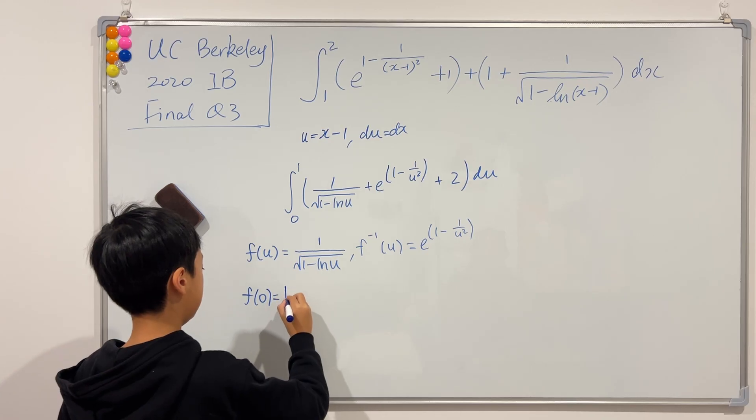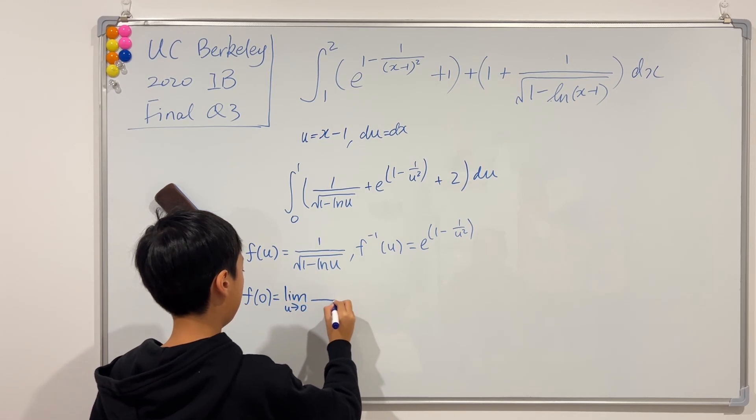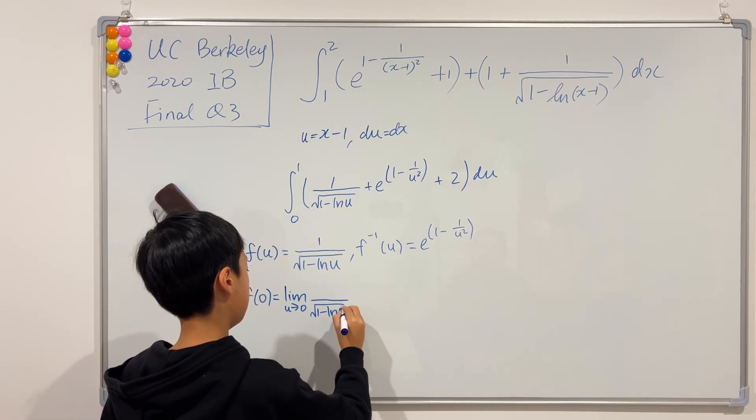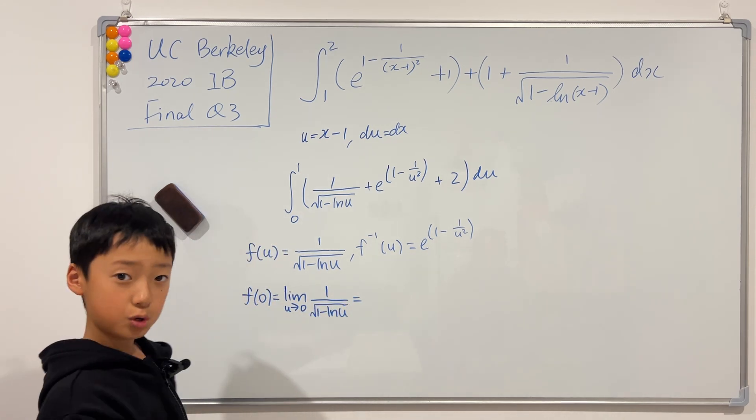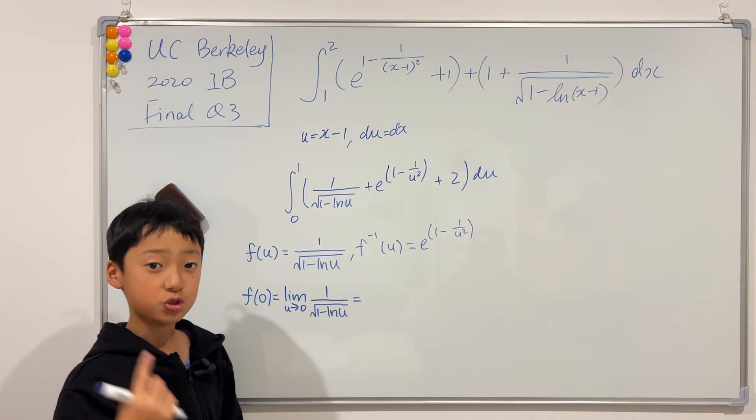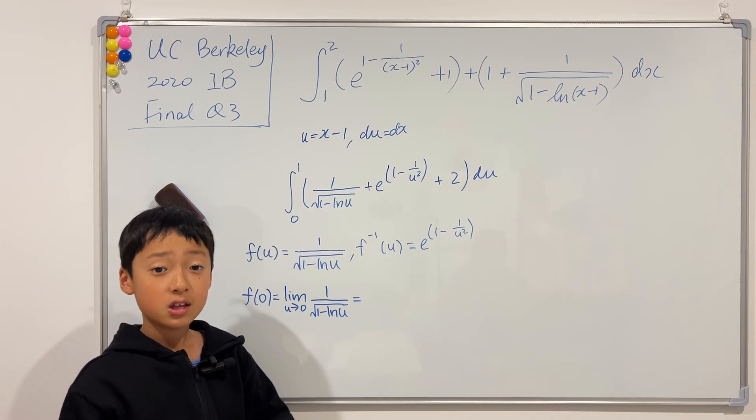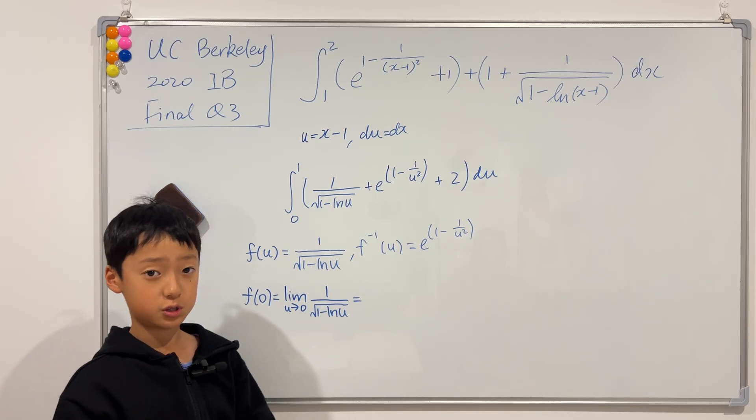This is equal to the limit as u goes to 0 of the bottom, still square root of 1 minus ln of u. The top, 1, this is equal to 1. As u approaches 0, ln of u approaches negative infinity. 1 minus negative infinity is infinity. 1 over infinity, or 1 over the square root of infinity, is 0. All right, cool. Now I have to do f(1).